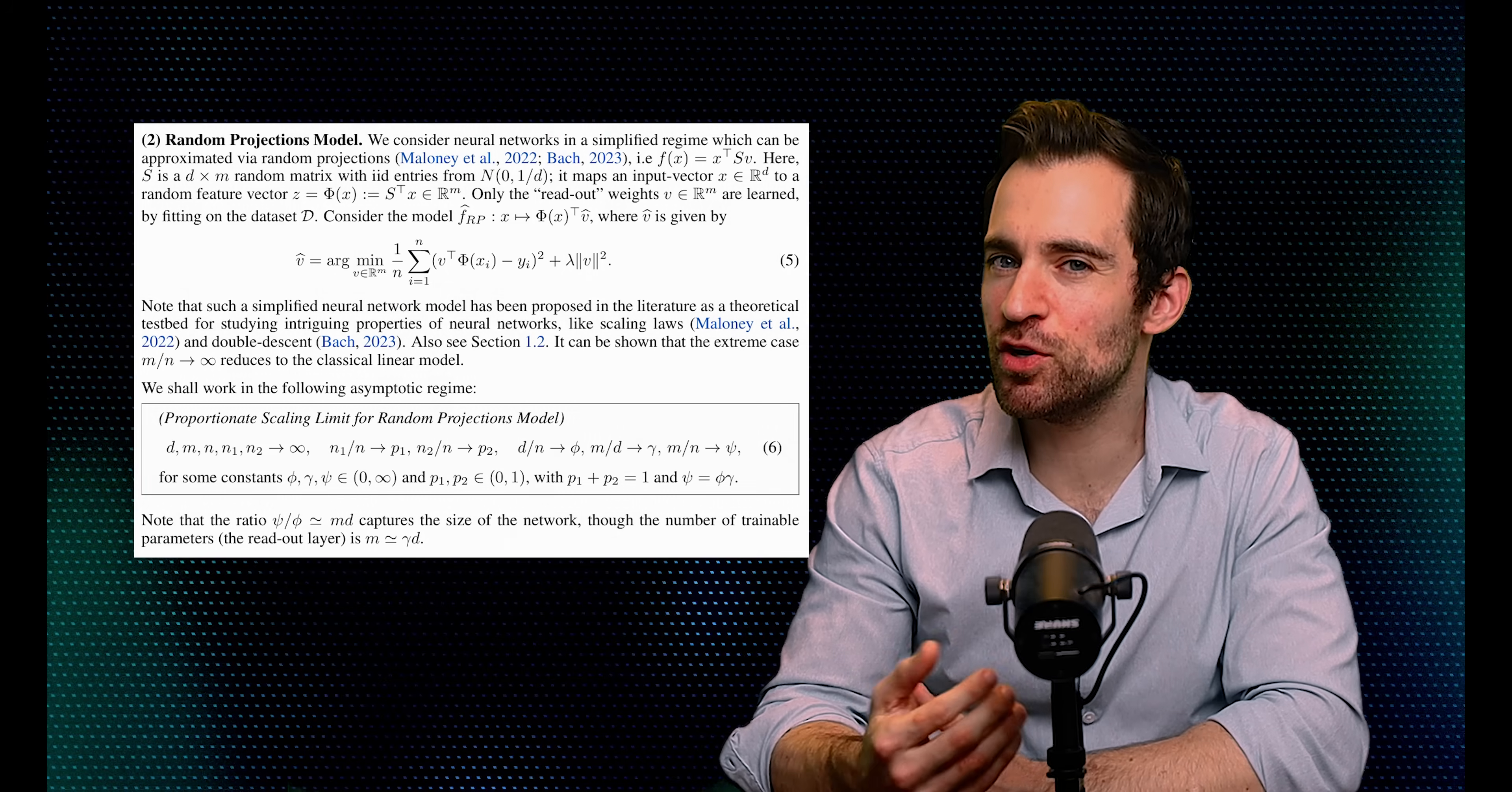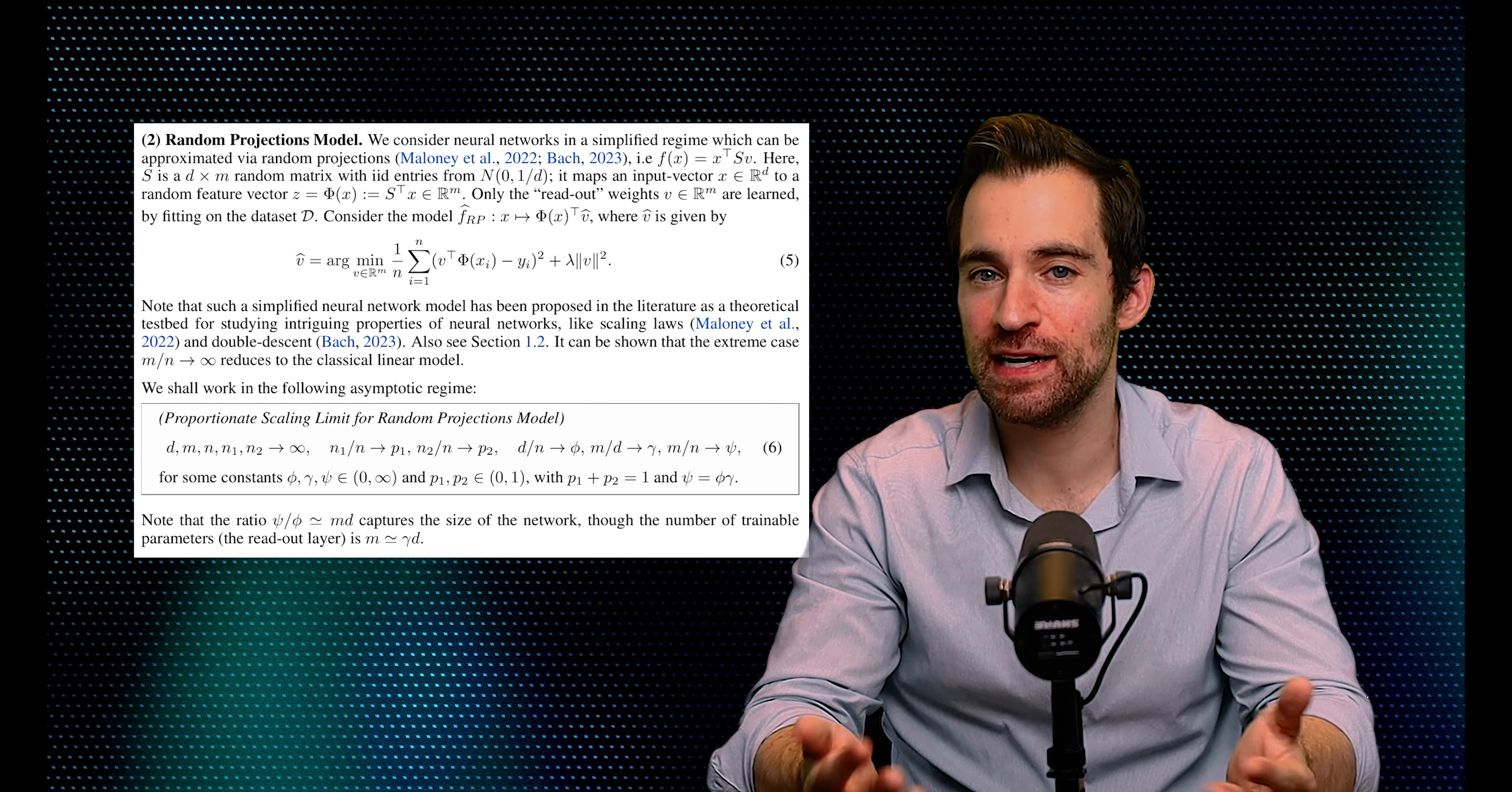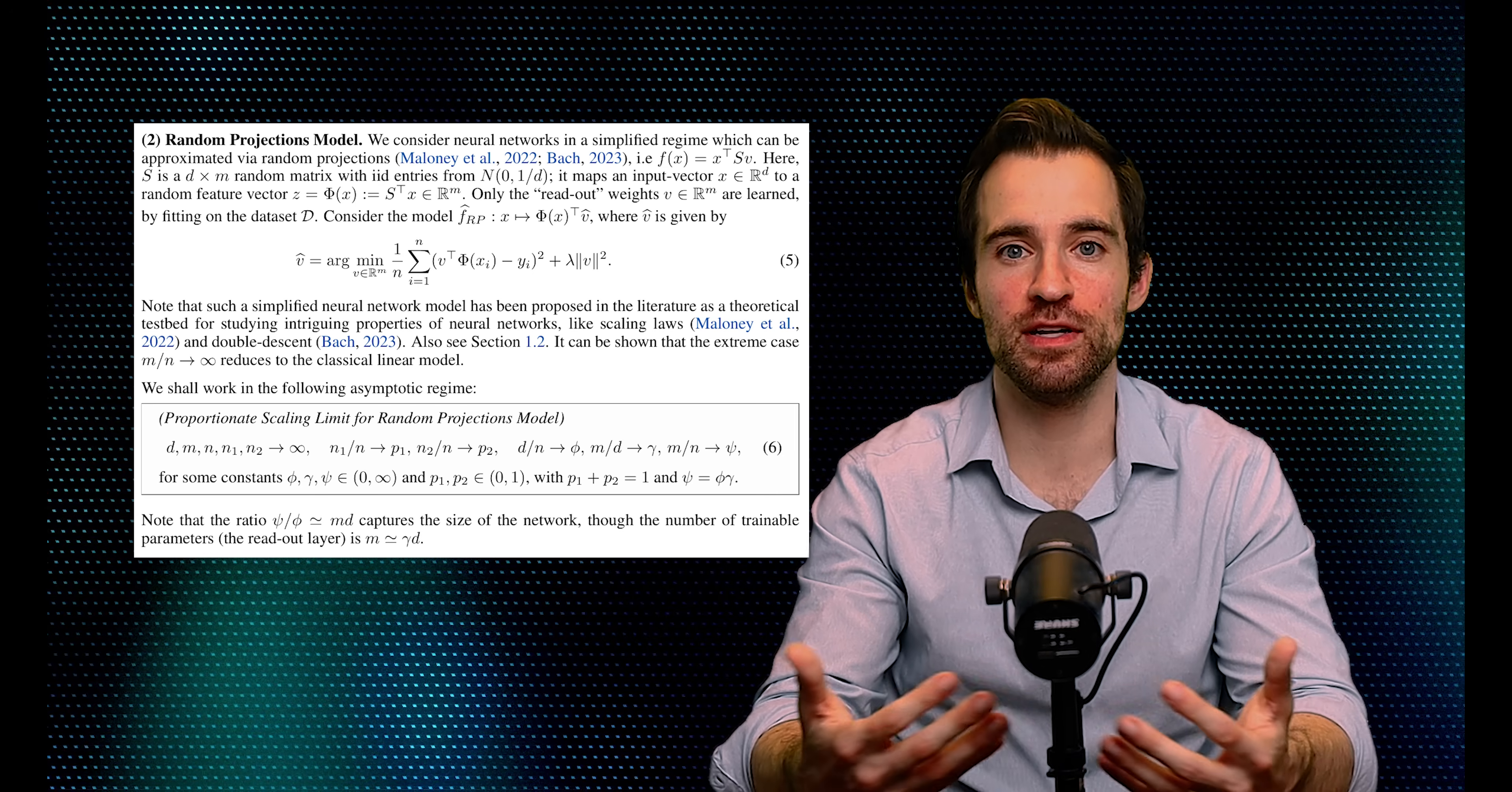Further, they extend a linear regression case to the world of neural networks by using something called random projections. They rely on a theorem that says a neural network can be recreated by a linear model via randomly projected features. And so they use this to create a bridge. And then they can get an analogous bias-variance decomposition theorem in the more complex case of neural networks. And neural networks include things like language models.